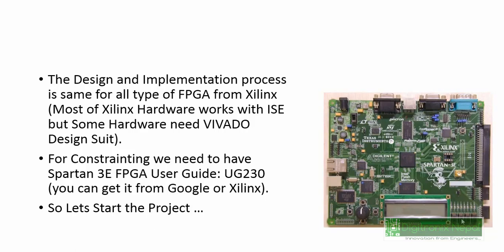We are going to use two slide switches on the Spartan 3 FPGA. Switch 0 is mapped to pin L13 and Switch 1 is mapped to pin L14. We will take input from those two switches and show the output on one of the eight LEDs. For constraining, we need to refer to UG230, which is the user guide for the Spartan 3 FPGA starter kit.